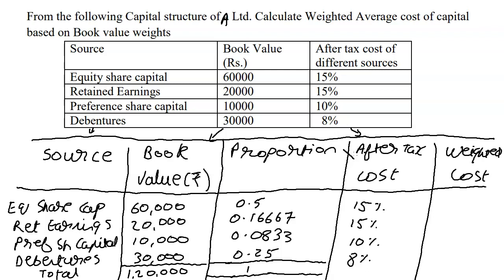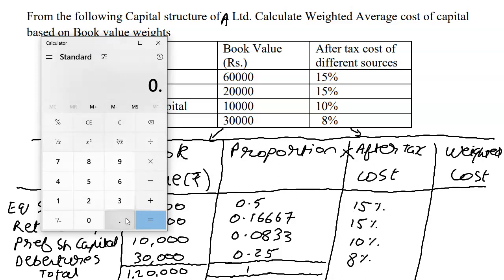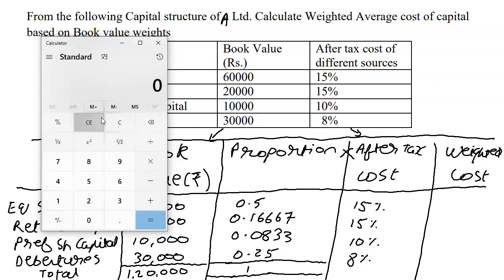Now multiply the proportion into after-tax cost. I would suggest you ignore the percent sign — the WACC answer is normally in percent, so let's not unnecessarily complicate it by moving from decimal into percent and back. So we have 0.5 into 15, and that gives me 7.5.